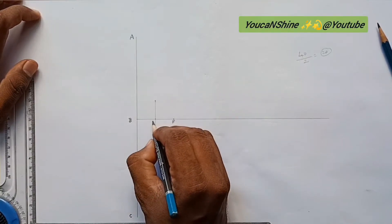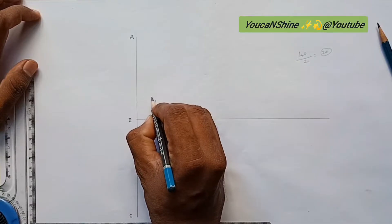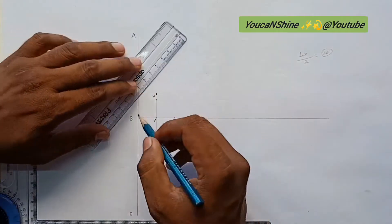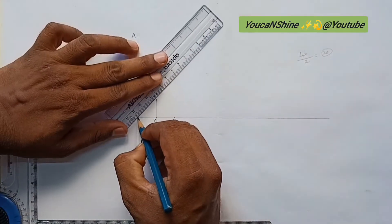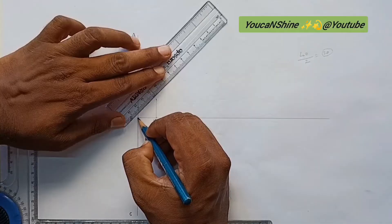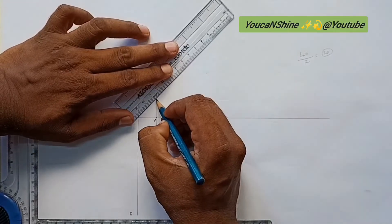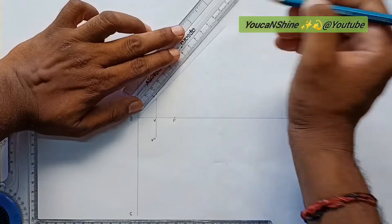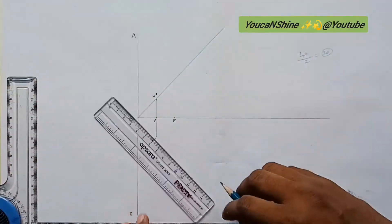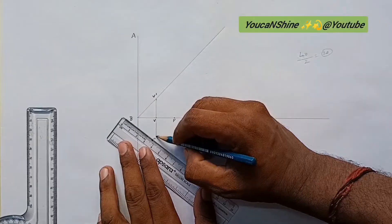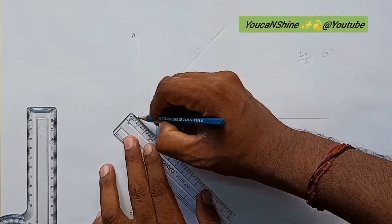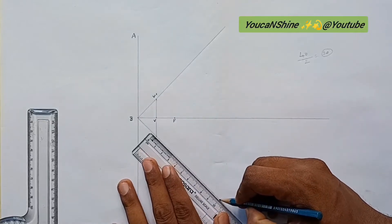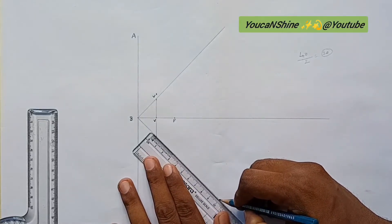This is V. This is V dash. To scale, we align V dash with V dash. We align the 2H pencil lines. We align the two lines and we can draw the parabola.